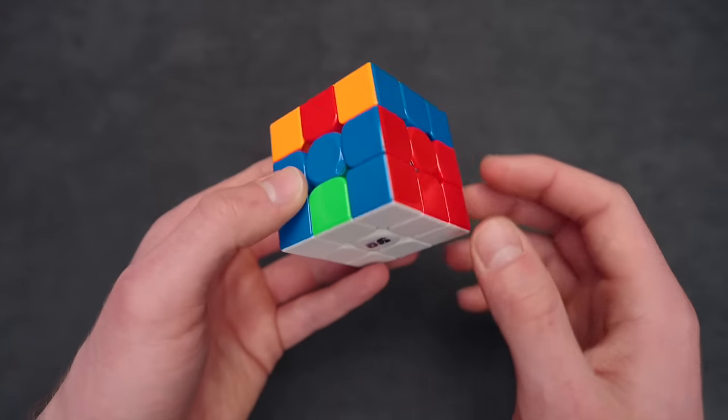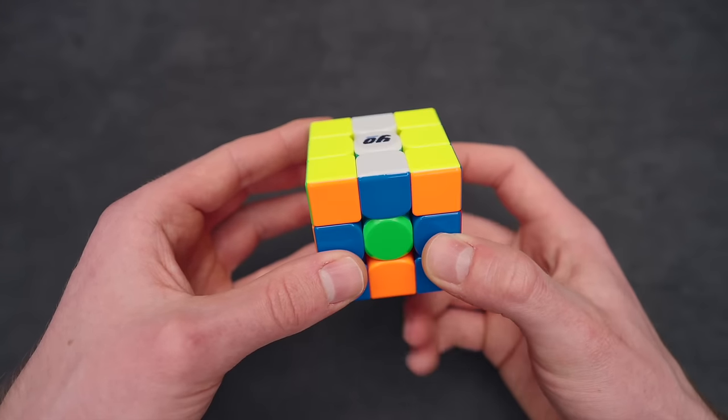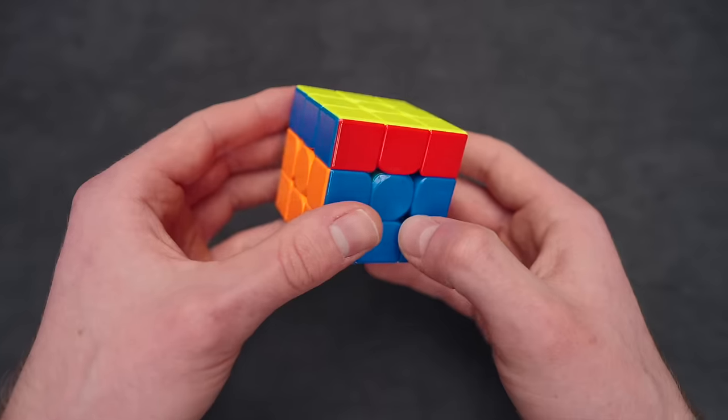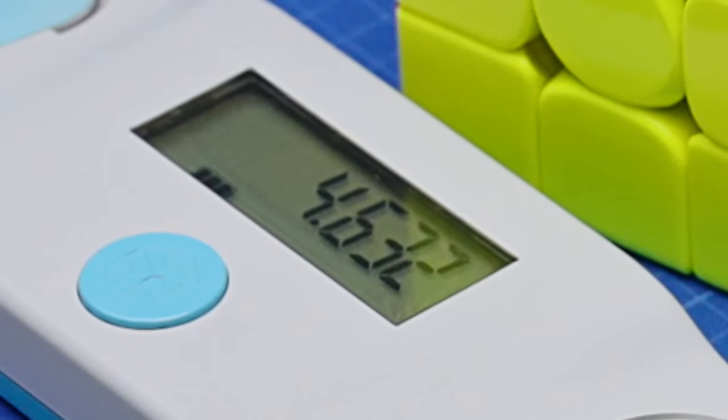This is the best case you can have when you have two edges that need to be swapped. Because if I do M2U2 M2 now, I have pretty much a PLL skip. So I align the last layer, put down the cube, and I have 4.63 seconds.